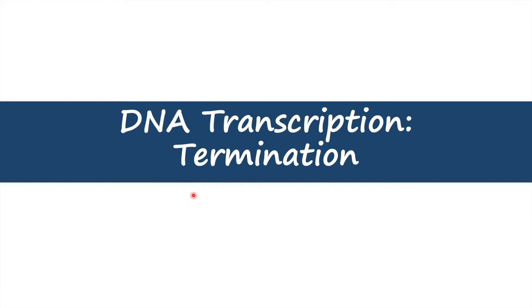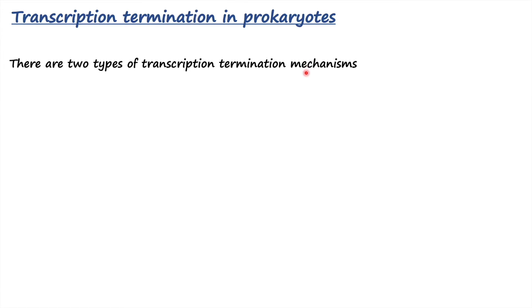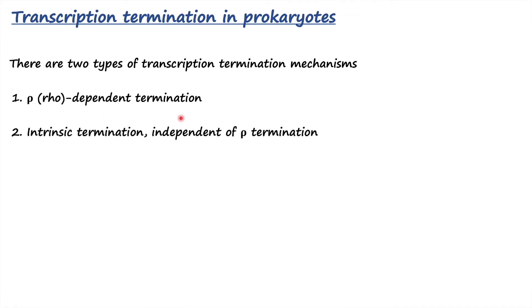Today I'm going to talk about the termination of DNA transcription in both prokaryotes and eukaryotes. I would also request you to watch my previous video on DNA transcription initiation and elongation. There are basically two types of transcription termination mechanisms in prokaryotes: first, rho-dependent termination, which depends on the rho protein, and second, intrinsic termination, which is independent of rho.